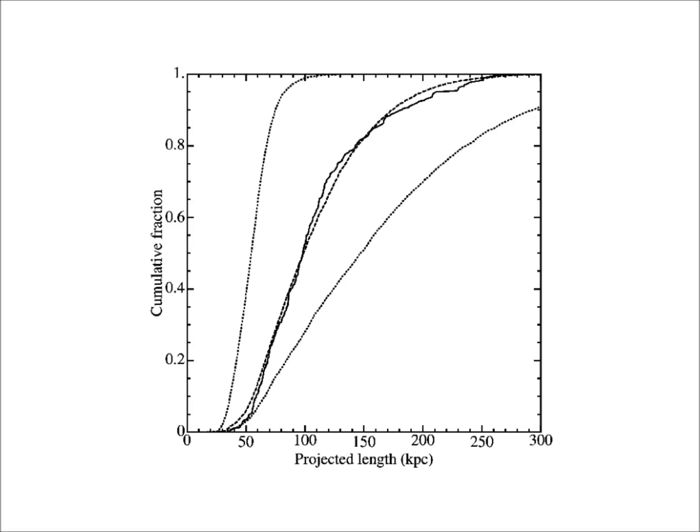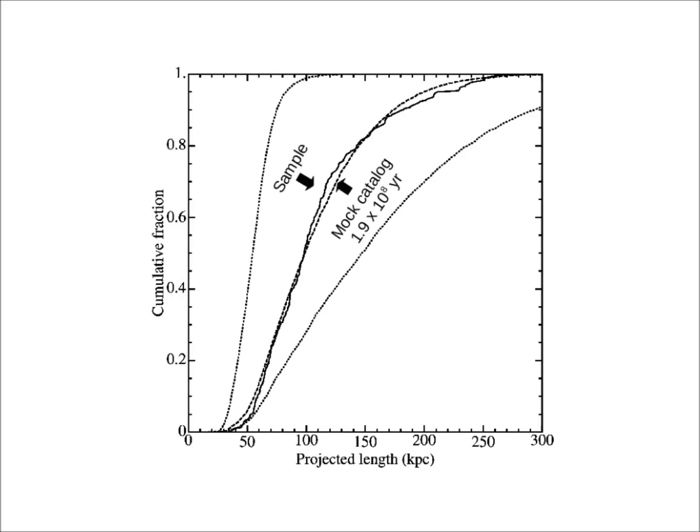In this figure, we have the cumulative length distribution of the sample in the solid line, and the best-fitting mock catalog, which has a lifetime of 190 million years, in the dashed line. To illustrate how sensitive this method is, we also used two dotted lines to show the expected length distributions for two other lifetimes: 62 million years for the line on the left, and 330 million years for the line on the right.